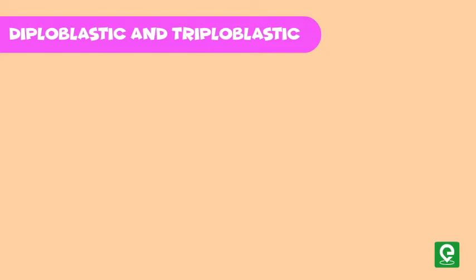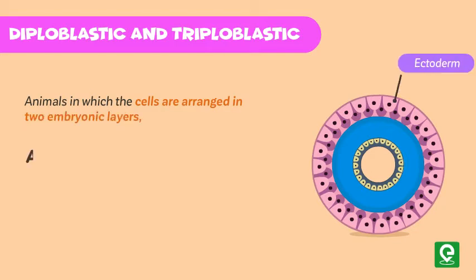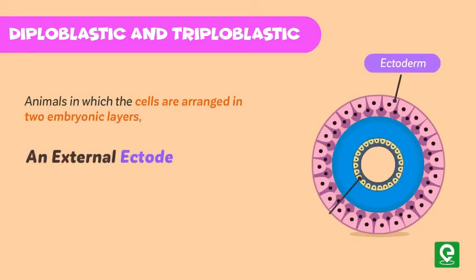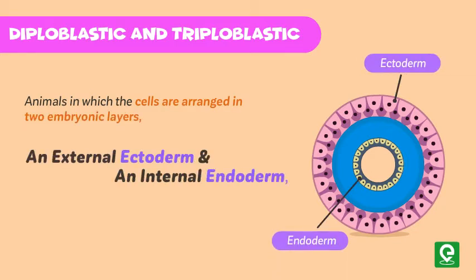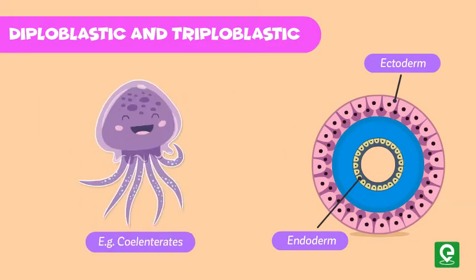Diploblastic and triploblastic organization: animals in which cells are arranged in two embryonic layers — an external ectoderm and an internal endoderm — are called diploblastic animals. Example: cnidarians.